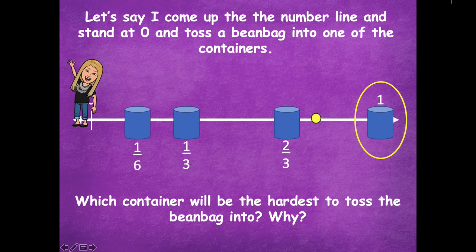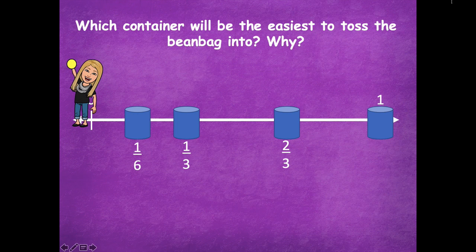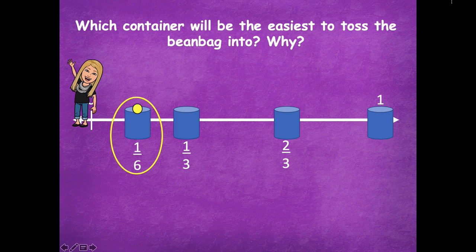I missed it. I'm not going to give up — I'll try one more time. I was even worse that time. It's true — that is the hardest one to toss into because it's the furthest distance from zero. Which container will be the easiest to toss the bean bag into and why? Probably one-sixth, because it's the closest to me. And I nailed it! Because it was the closest to me standing at zero, it was the easiest — the shortest distance. So I can tell that one whole is greater than one-sixth because it's farther from zero.